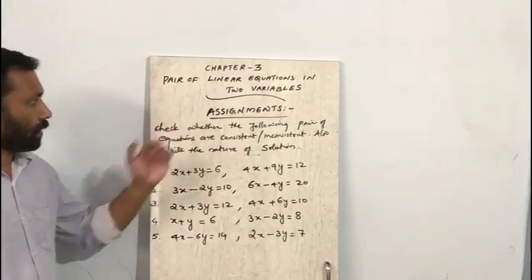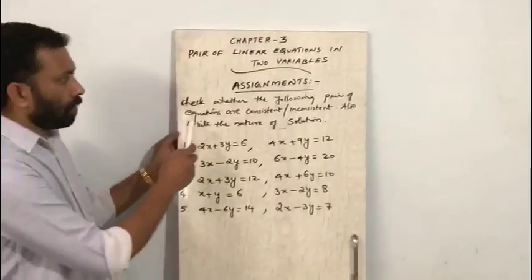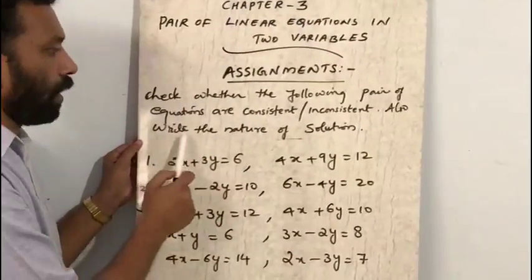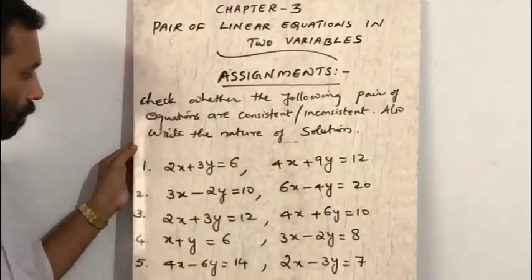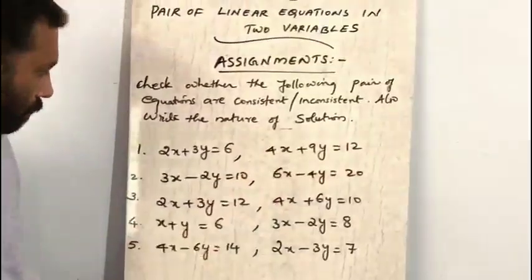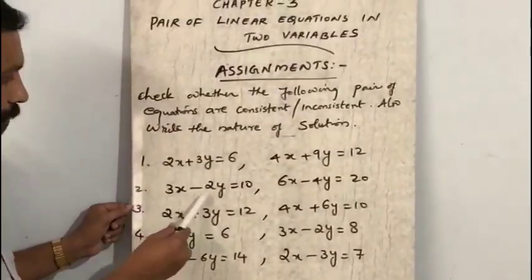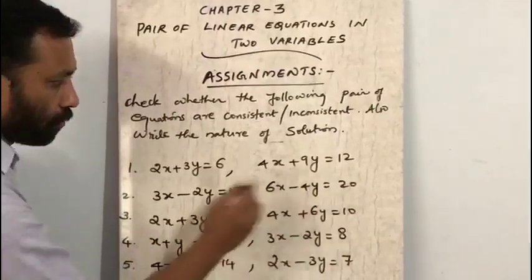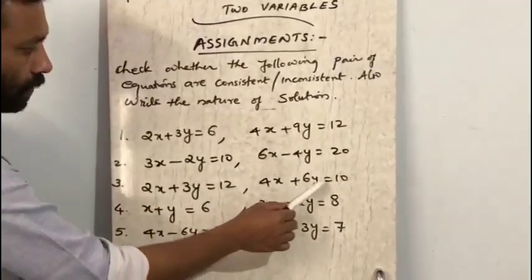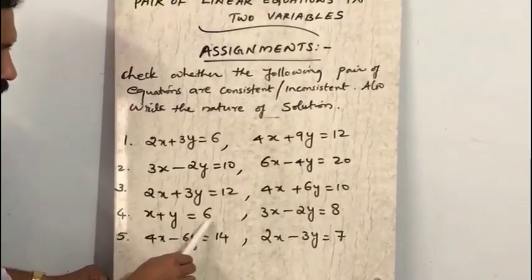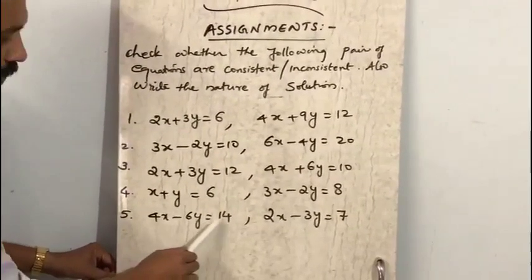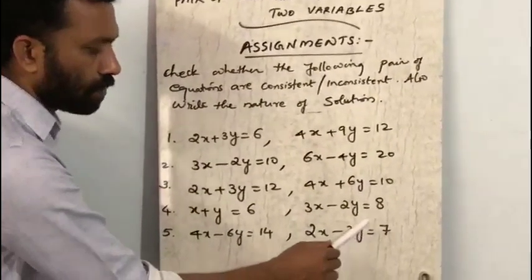Now try these assignments. Check whether the following pairs of equations are consistent or inconsistent, and write the nature of the solution. Question 1: 2x plus 3y equals 6, 4x plus 9y equals 12. Question 2: 3x minus 2y equals 10, 6x minus 4y equals 20. Question 3: 2x plus 3y equals 12, 4x plus 6y equals 10. Question 4: x plus y equals 6, 3x minus 2y equals 8. Question 5: 4x minus 6y equals 14, 2x minus 3y equals 7. Thank you.